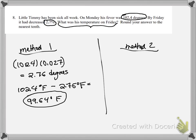So that's one way to do this problem. The other way is to think about, just like we did in the last problem, you have 100% minus 2.7%. Well, what is that? Well, that's 97.3%.